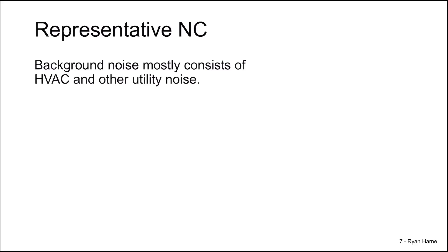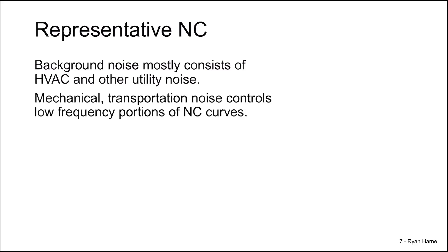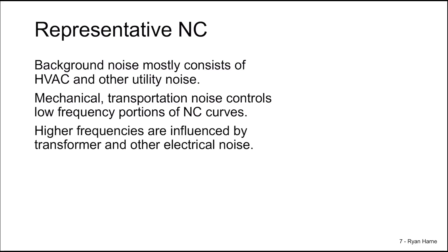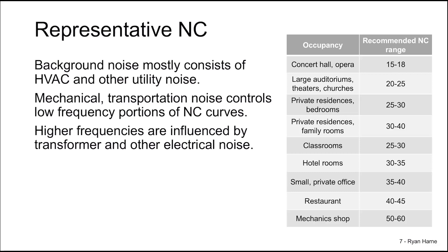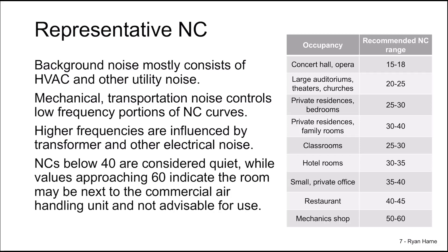Background noise mostly consists of HVAC — heating, ventilation, and air conditioning noise — or other utility noise. Mechanical and transportation noise in the room mostly controls the low frequency portions of the NC curves, whereas the higher frequencies in the NC curves are largely influenced by electrical noise, for instance electrical transformers. If we consider the relationship between NCs of a room and recommended use, we find that for rooms where high privacy and clear speech is needed, very low NC values are recommended. NC values below 40 are considered quiet, while values above 60 indicate more of an industrial or heavy commercial space close to air handling units, and is not generally advisable for day-to-day use.